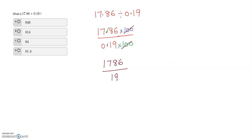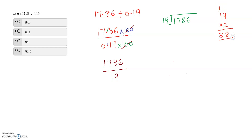Now we have 1786 in the numerator and 19 in the denominator. I set up the long division with 19 outside. We build the times table of 19: 19 times 2 is 38. Taking two digits, 17 is still smaller than 19, so I take three digits which is 178.